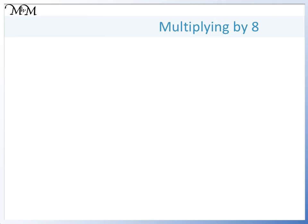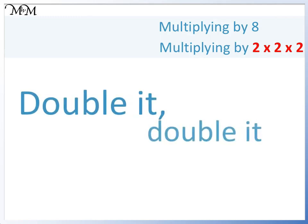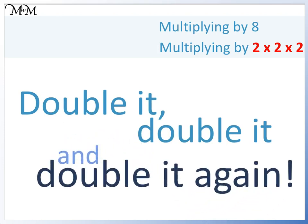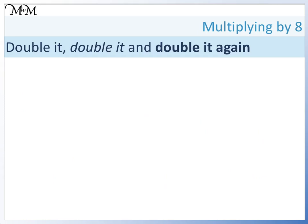We will now look at multiplying by 8. Because 8 is 2 times 2 times 2, we double it, double it, and double it again. We will use 5 as an example again because it is a nice easy number and we can check our answer using times tables.